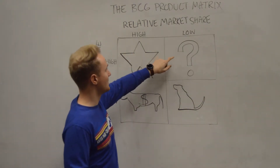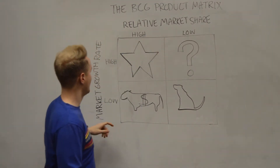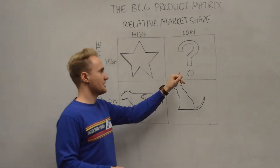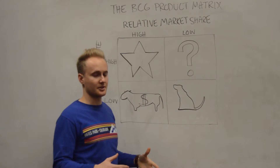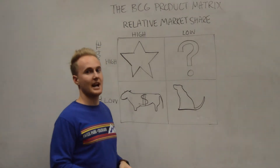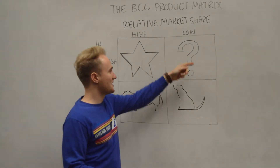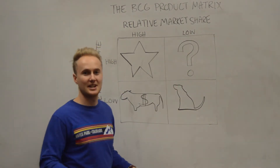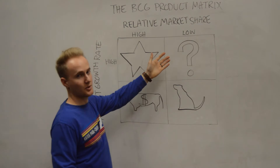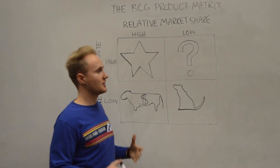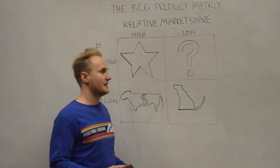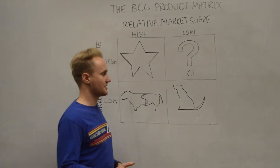Right here we have low relative market share along with high market growth rate. So this is a product that doesn't really sell all that well — there are other products that sell better — but it does generate a lot of cash. That's a little bit confusing, so we call that a question mark. This is kind of a gray area. Companies don't know if they should invest or just drop that product altogether. It's very volatile, it could change at any time. Not really a zone you want to be in, although there have been some success stories that we'll talk about in a second.